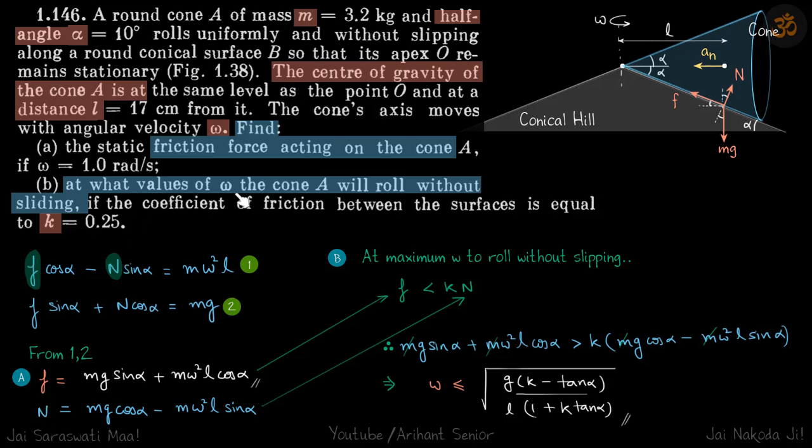Now in the second part, what should be the omega for which the sliding will not occur? In the system if sliding should not occur, then the frictional force must be less than maximum frictional force, and maximum frictional force is KN. So our frictional force must be less than KN. Here we can put the value of F and N from our equations which we derived here, and just simplifying it you will get your result that omega should be less than this quantity.